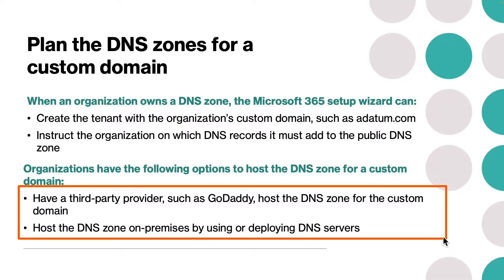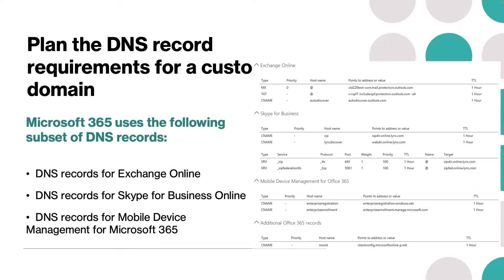There are a couple of options to host the DNS zone for a custom domain. The first option is to have a third-party provider such as GoDaddy host the DNS zone — this enables an organization to manage DNS through a web portal. The second option is to host the DNS zone on-premises by deploying DNS servers in the perimeter network, so that internet users can resolve the organization's internet-facing domain resources.